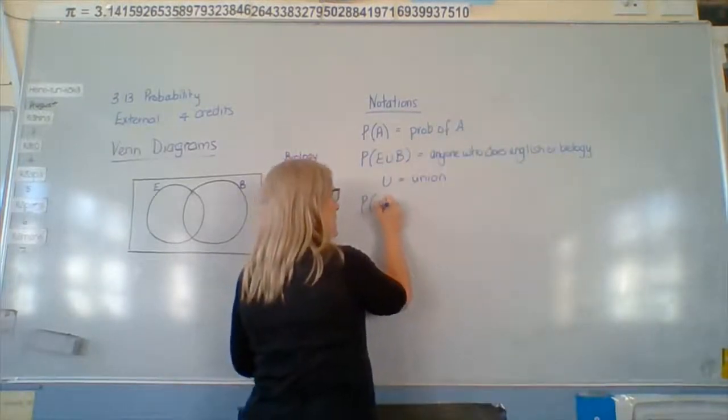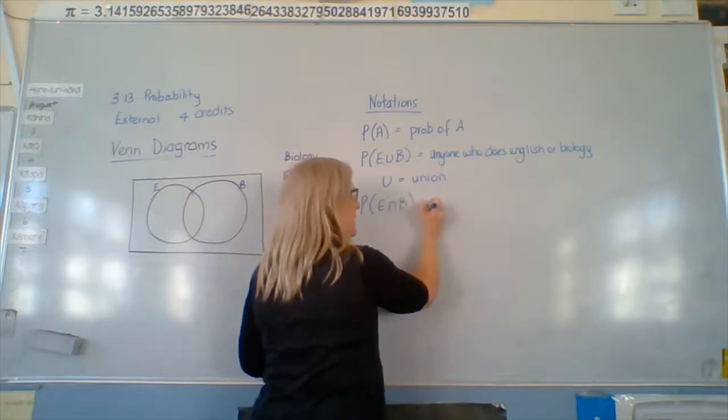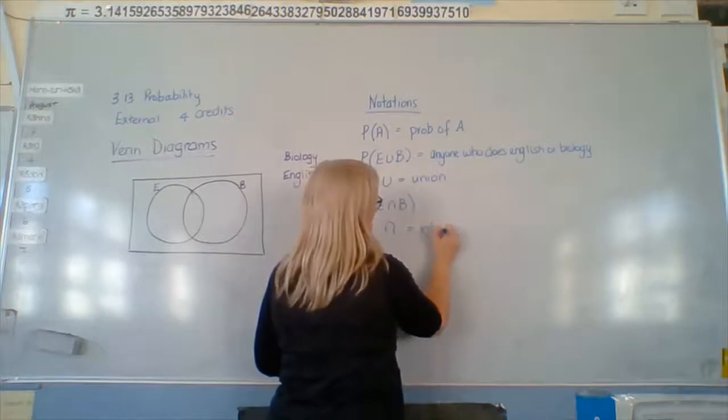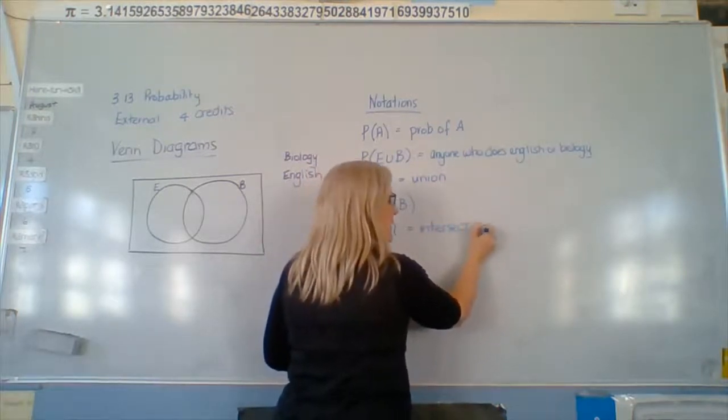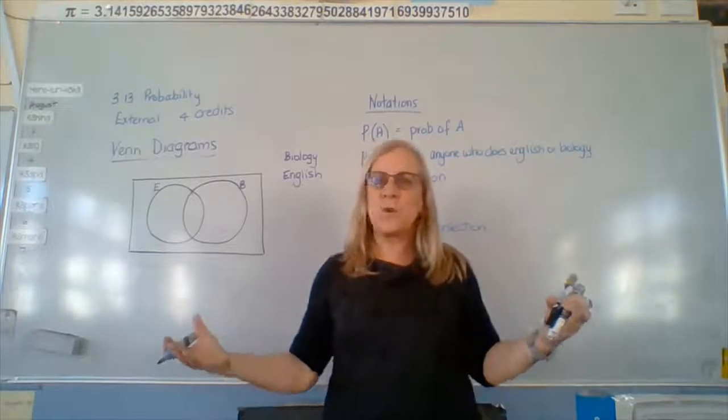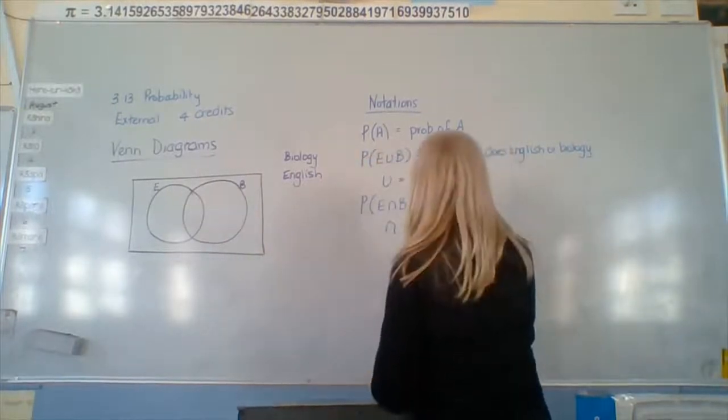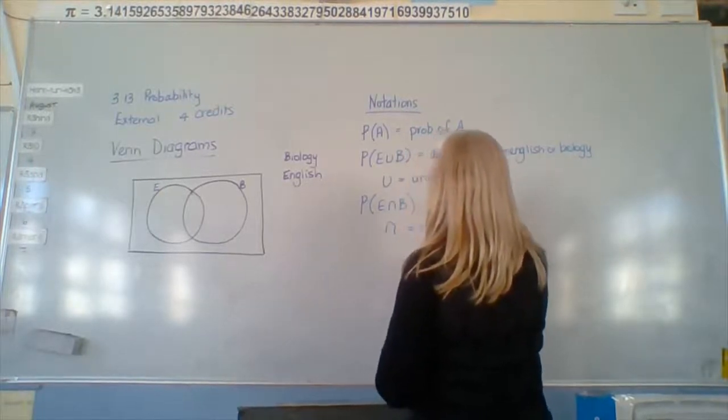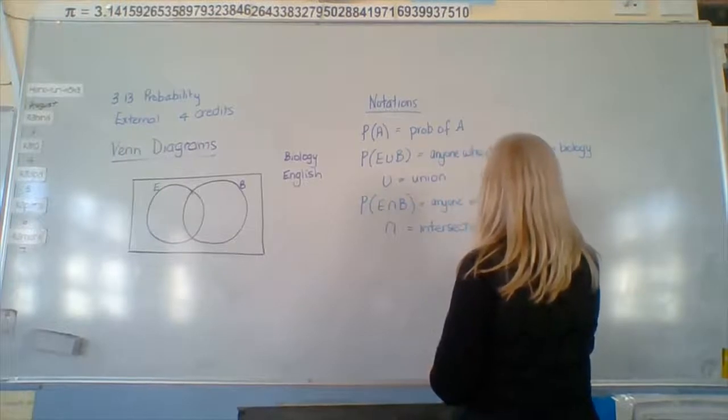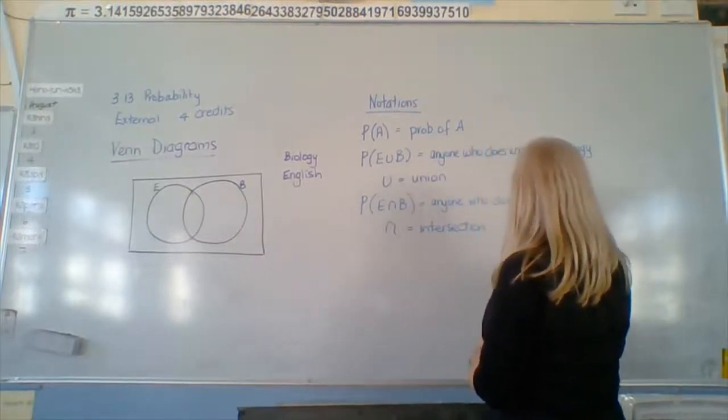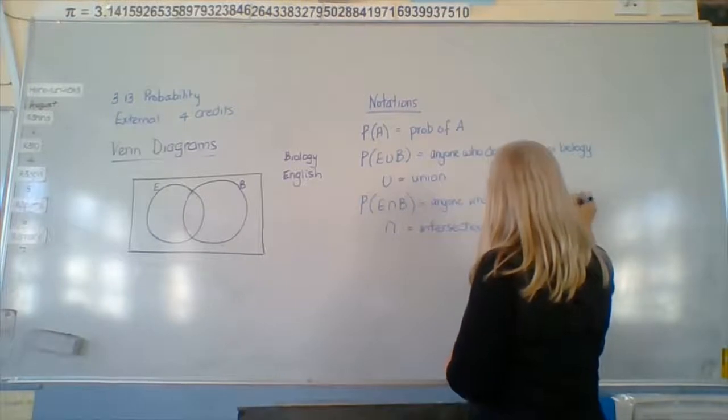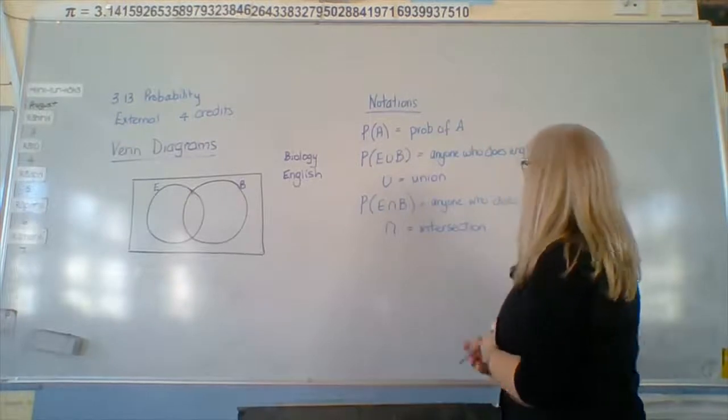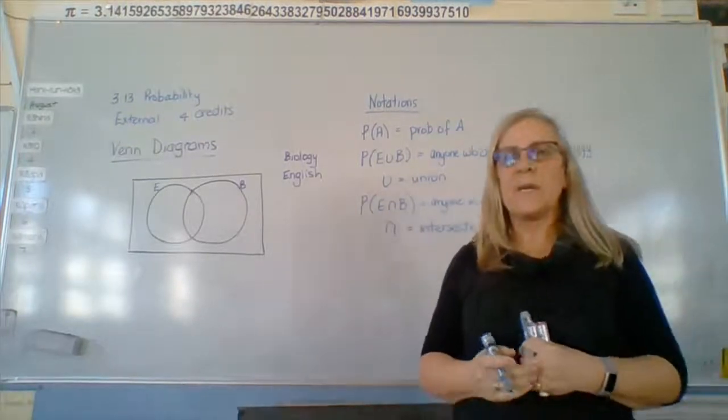This one upside down stands for intersection. And the intersection is, of course, those people who do both. So remember, this one's or, but it's also and. Okay. So that's the big set.